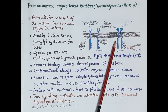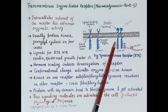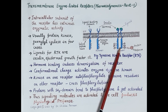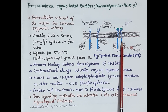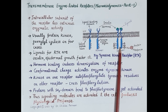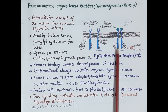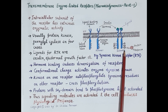The conformational change activates the enzyme tyrosine kinase, which is located in this region. Activated tyrosine kinase on one receptor auto-phosphorylates tyrosine residues on the other receptor. This process is termed cross-phosphorylation.